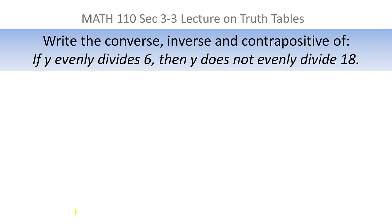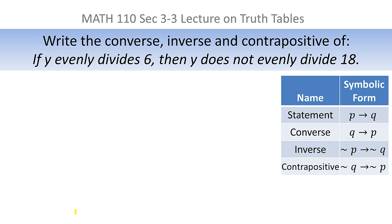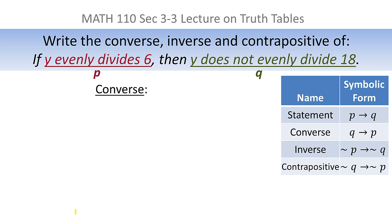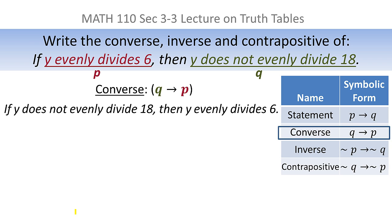Let's look at a problem: write the converse, inverse, and contrapositive of the statement 'if y evenly divides 6 then y does not evenly divide 18.' Recall: the converse is q implies p, the inverse is not p implies not q, and the contrapositive is not q implies not p. For the converse, we switch p and q, giving us 'if y does not evenly divide 18 then y evenly divides 6.'